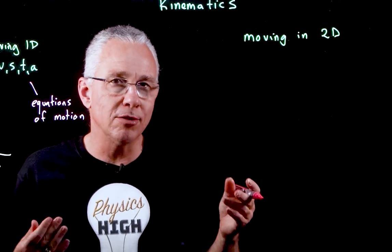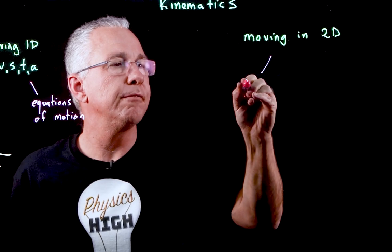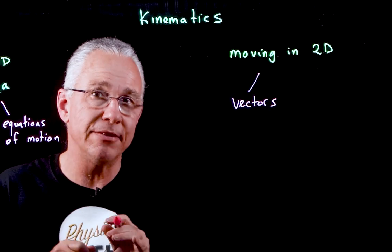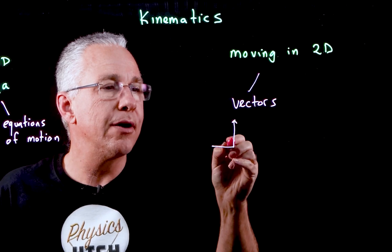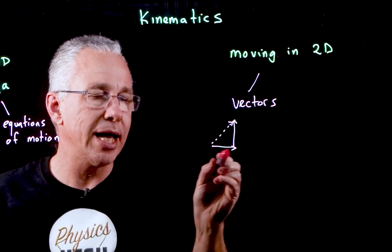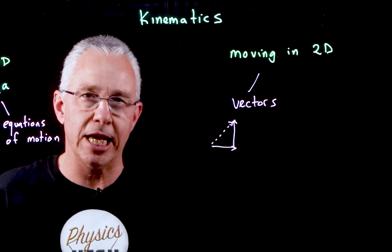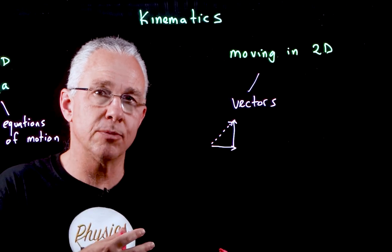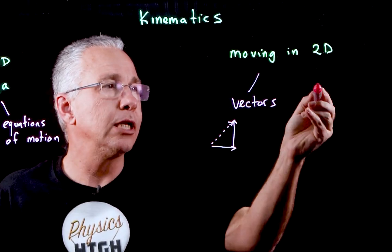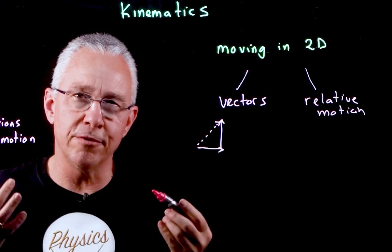When we look at two dimensions, we first need to understand how to analyze objects moving in 2D, which brings us to vectors. You need to be familiar with how to analyze vectors both graphically — for example, adding vectors using the head-to-tail method where the resultant goes from start to finish — and also by looking at components: the horizontal component, the vertical component, and the trigonometry associated with that.